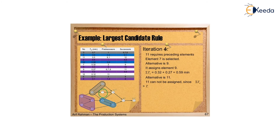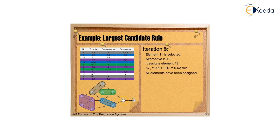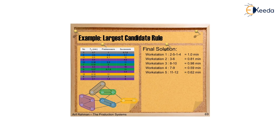In iteration 4, assigning the 9th element gives 0.59 minutes; the alternative element 11 cannot be assigned as it exceeds Tc. In iteration 5, element 11 is selected with alternative element 12, giving a total estimated time of 0.62 minutes — all elements are now assigned. The final workstation times are: workstation 1 = 1 minute, workstation 2 = 0.81 minutes, workstation 3 = 0.98 minutes, workstation 4 = 0.59 minutes, workstation 5 = 0.62 minutes.